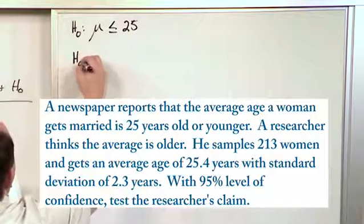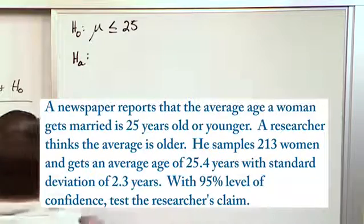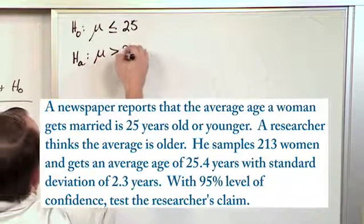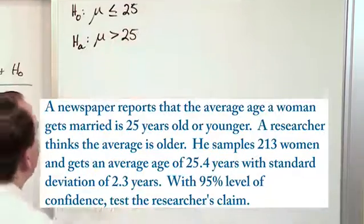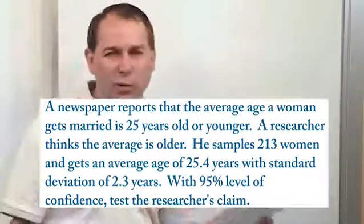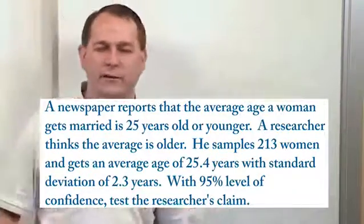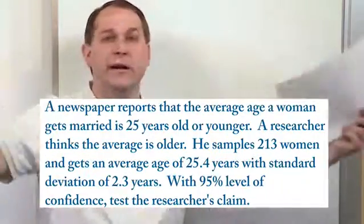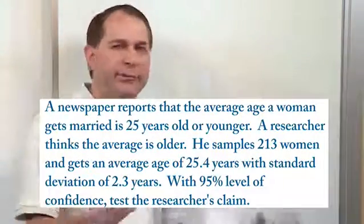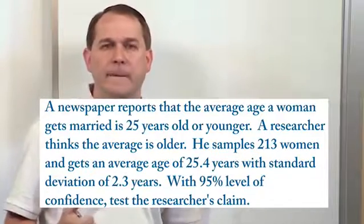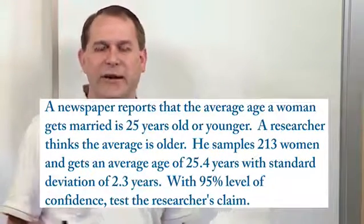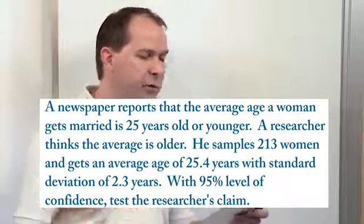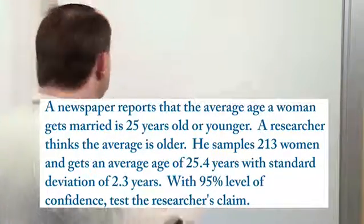So the alternate hypothesis — the researcher thinks the average age is older than 25. Of course, he doesn't mean that every single person who gets married is older than 25. He's saying that on average, for our population, he thinks it should be higher than 25. But you can't check the whole population or sample everybody. So what this researcher does is sample 213 women to see if he can figure out the answer.